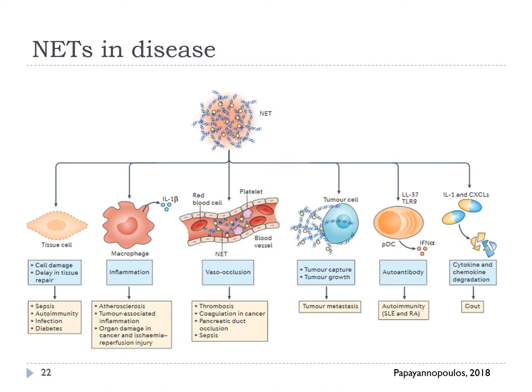NETs in disease. Neutrophil extracellular traps cause pathology in a number of conditions through several mechanisms. Direct cell damage is implicated in infection, sepsis, autoimmunity, and diabetes. By lysing macrophages, NETs drive inflammation. NETs drive atherosclerosis. The increased propensity for NETosis promotes inflammation and organ damage in cancer and ischemia-reperfusion injury. NET formation in circulation promotes coagulation, vascular occlusion, and thrombosis. NETs in capillary vessels capture circulating cells and potentially promote tumor metastasis.